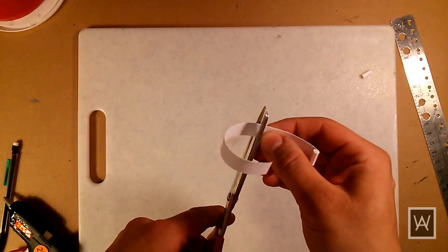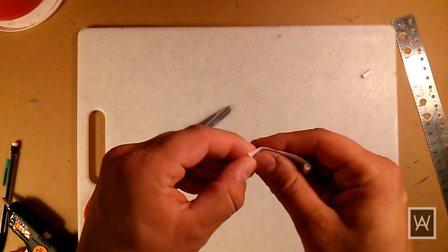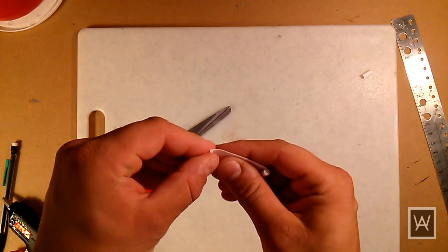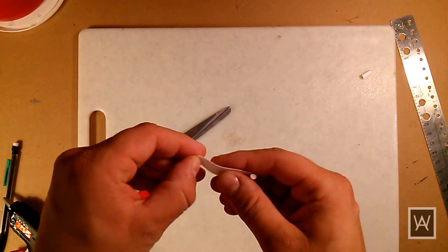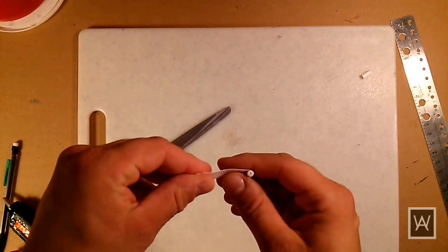Now let's make an open scroll. Use the same technique as before but leave about 2 inches of excess paper. Roll that end up and glue that end in place as well.